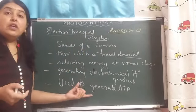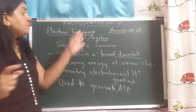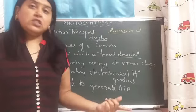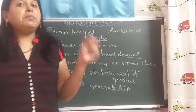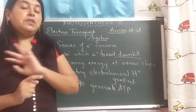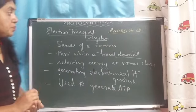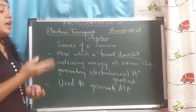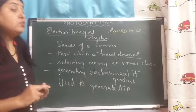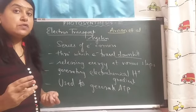This is photophosphorylation — it is a sunlight-driven process. That is why it is called photophosphorylation, as opposed to oxidative phosphorylation in respiration. This process occurs in thylakoids, whereas in respiration it occurs in the inner membrane of mitochondria. Both of them generate ATP. Now we will see the two types: cyclic and non-cyclic photophosphorylation.